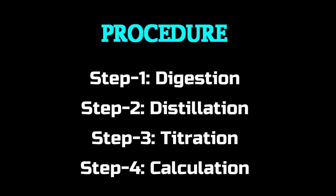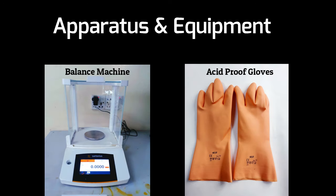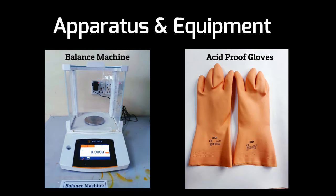We can analyze a sample for crude protein content by following four steps: digestion, distillation, titration, and calculation. To do the test, we need some apparatus and equipment.